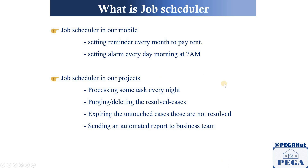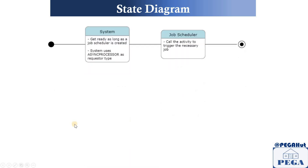Now let's understand the state diagram — how it works at a high level. When you create a job scheduler, the system identifies it and engages a requester type called async processor to trigger the job scheduler. Once triggered, the job scheduler calls an activity which actually does the business logic. Job scheduler is just a medium — it triggers an activity to perform the logic.